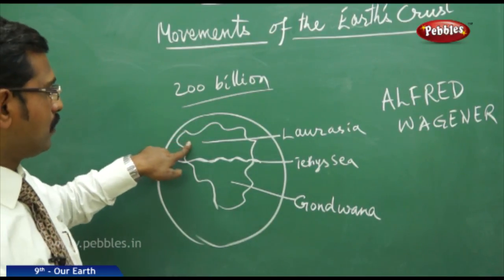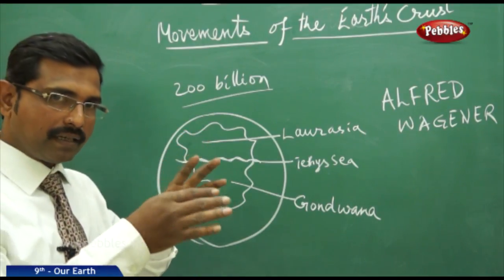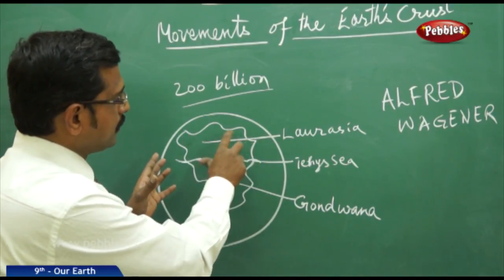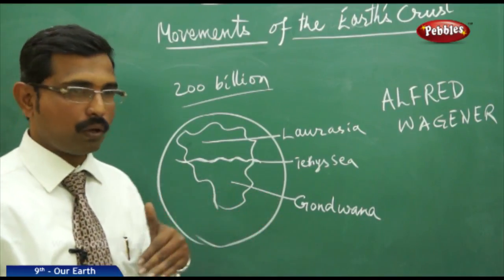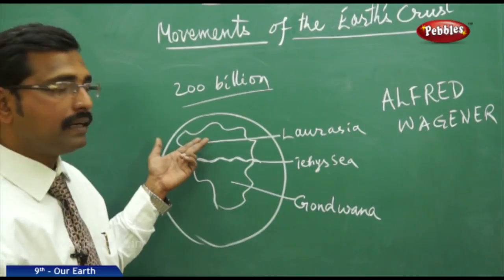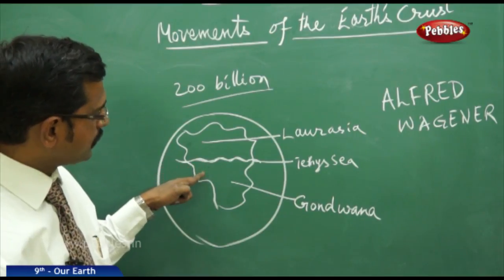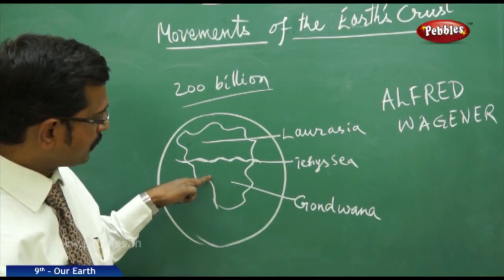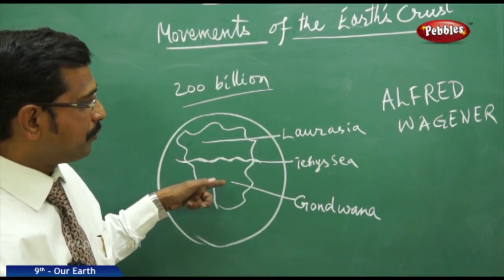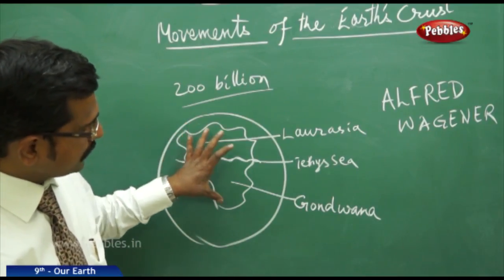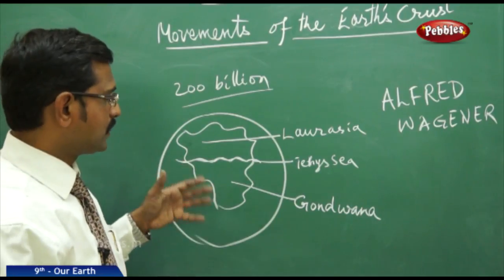Laurasia is composed of the northern part of the lands — mainly North America, Greenland, and Eurasia, which includes Europe, Asia, and the northern Indian part. The southern part, Gondwana, is composed of South America, part of India, the Middle East, Arabia, and Australia. These were the only lands at that time.